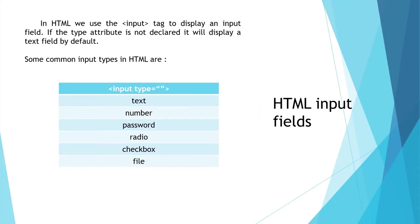To create an input element in HTML we need to create an input tag. Input tags don't have closing tags, and inside of this input tag we're going to have to use the type attribute to define what type of input it is going to be. On your screen right now we have six types of HTML input elements.